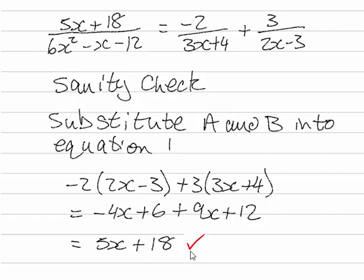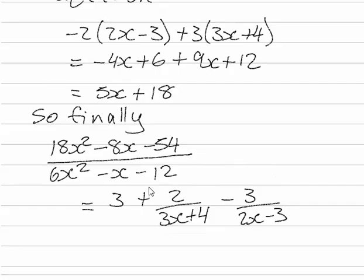Now we need to put the whole thing together. So bringing in the minus sign that we ignored right at the beginning this becomes plus we've got 2 over 3x plus 4 minus 3 over 2x minus 3 giving us the final answer.